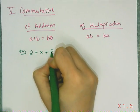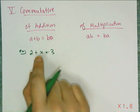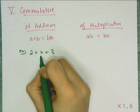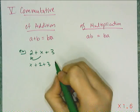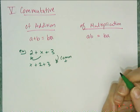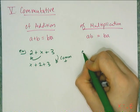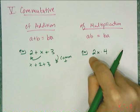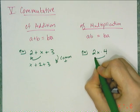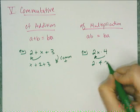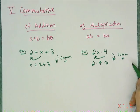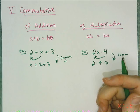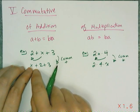I use the commutative property more often than any other field axiom, because I need to rearrange things so I can add or multiply them. For example, if I have 2 + x + 3, the 2 and 3 can be combined and the x needs to be in front. So rewriting it as x + 2 + 3 is an illustration of the commutative property of addition. Similarly, if I have 2 × x × 4, I move the 4 to get 2 × 4 × x — that's the commutative property of multiplication.